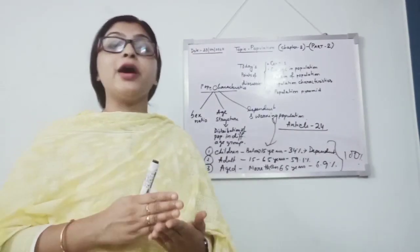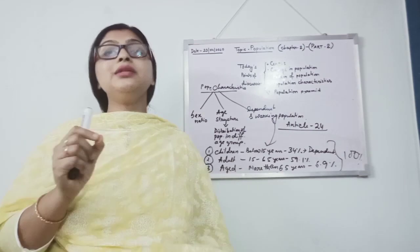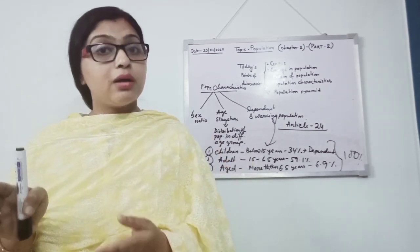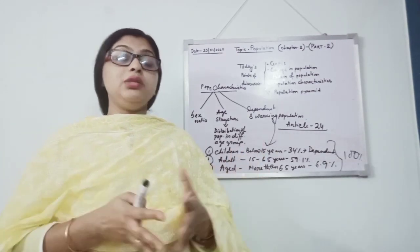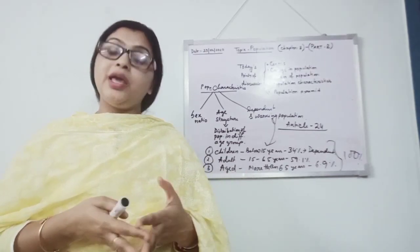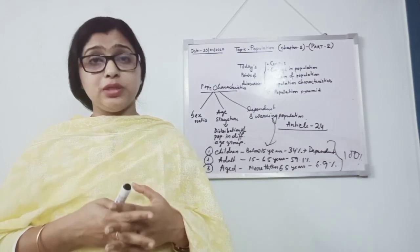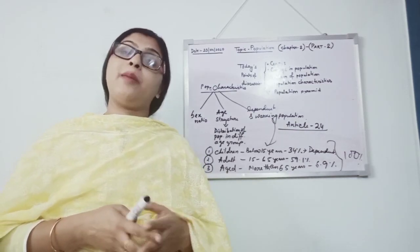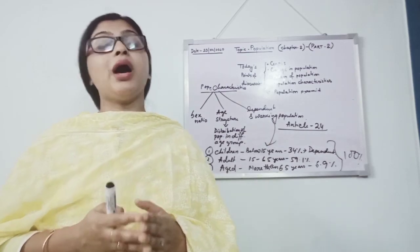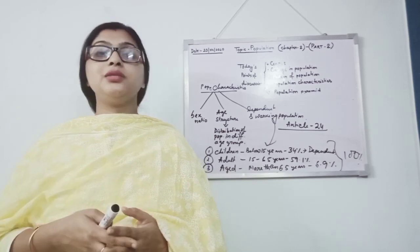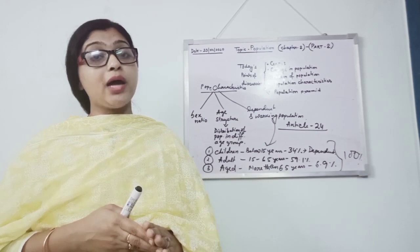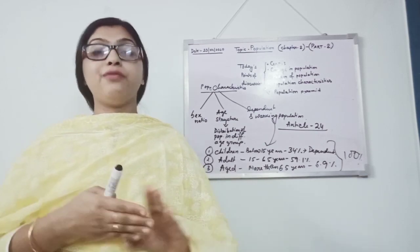Next, aged group, more than 65 years of age. Here we can't say this age group is totally independent or totally dependent. Why? Because some of them earn daily and they are not having any deposit or savings.